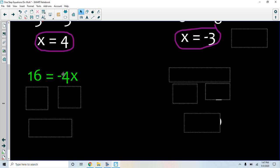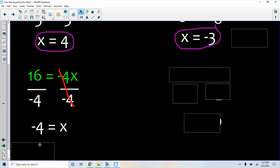Here the x is on the right side. That's okay. We solve it the same way. I have negative 4 times x. The minus belongs with that 4, so I'm going to divide by negative 4. Negative 4 divided by negative 4 is 1. So I have 1x. I have my equal sign, and 16 divided by negative 4 is negative 4.